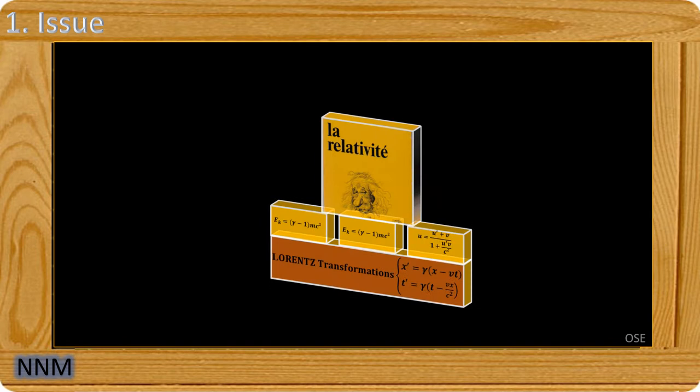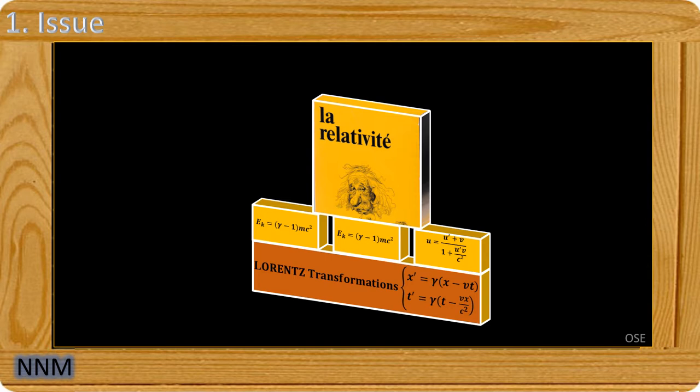Lorentz transformations are the foundation for relativity theory calculations, such as the gamma factor, kinetic energy, and the addition of relativistic velocities. If the derivation of the Lorentz transformation was false, the theory of relativity would collapse.